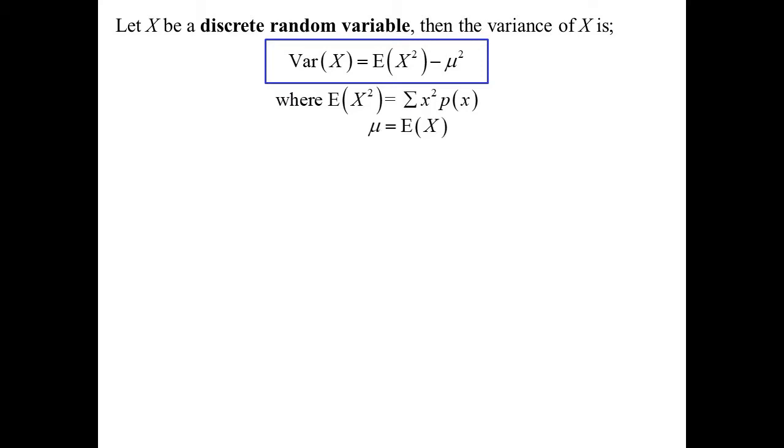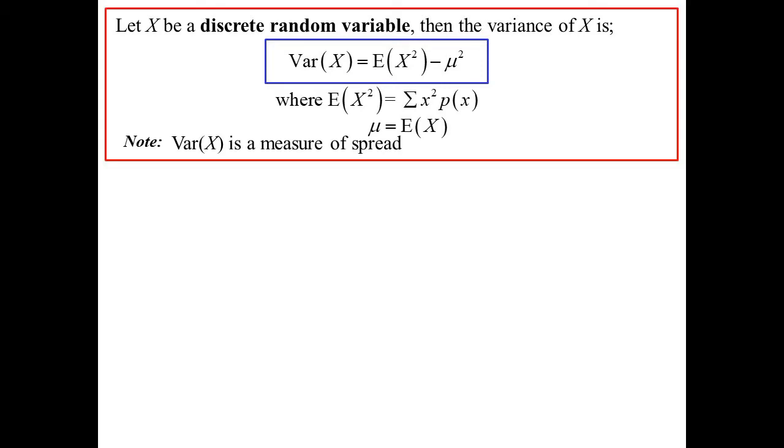Variance was the other important measure. Expected value of X squared: if expected value of X is X times PX, then expected value of X squared is X squared times PX. Mu is the expected value. And that's a measure of the spread, how close to the middle the data is or how spread out it is.